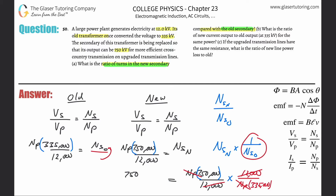So the ratio is 750,000 divided by 335,000, which equals approximately 2.24. The new secondary requires about 2.24 times more turns than the old secondary. That's what they're asking us to solve for.